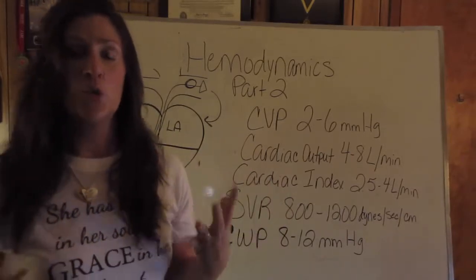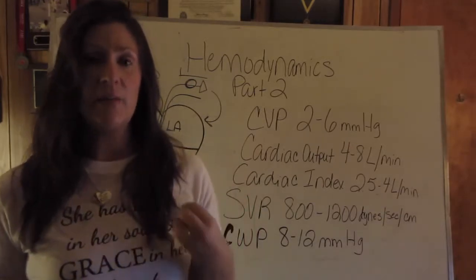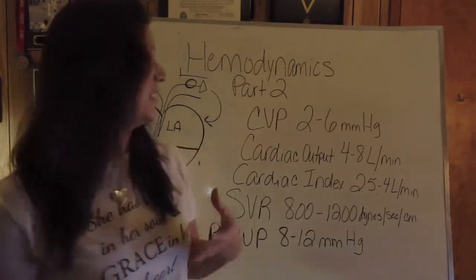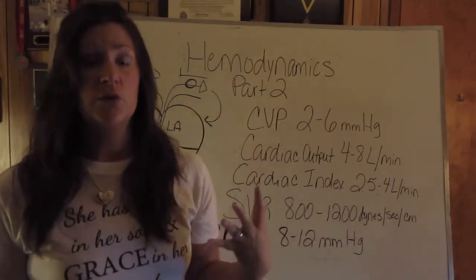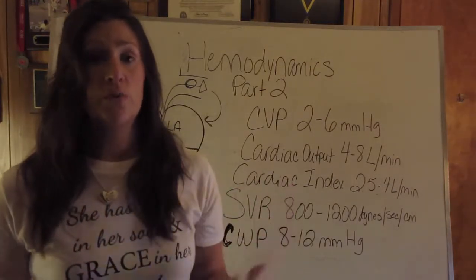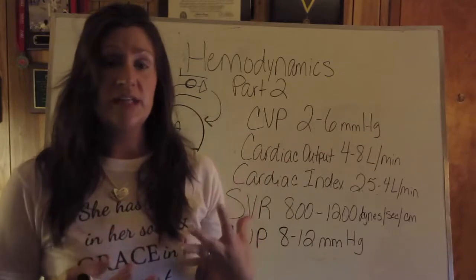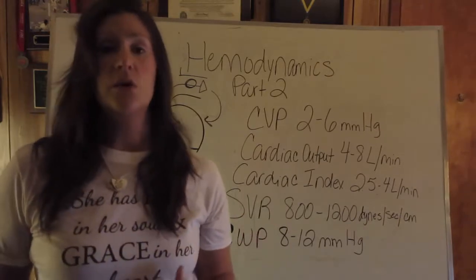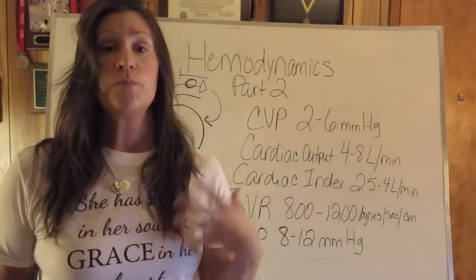CVP is a direct measurement of the pressure in the right atrium. CVP can be measured by using the distal port of a central line. CVP is the only measurement on the board that you don't need to have a pulmonary artery catheter in place. You can use a triple lumen distal port to measure CVP. CVP, right atrial pressure, or preload are used interchangeably.